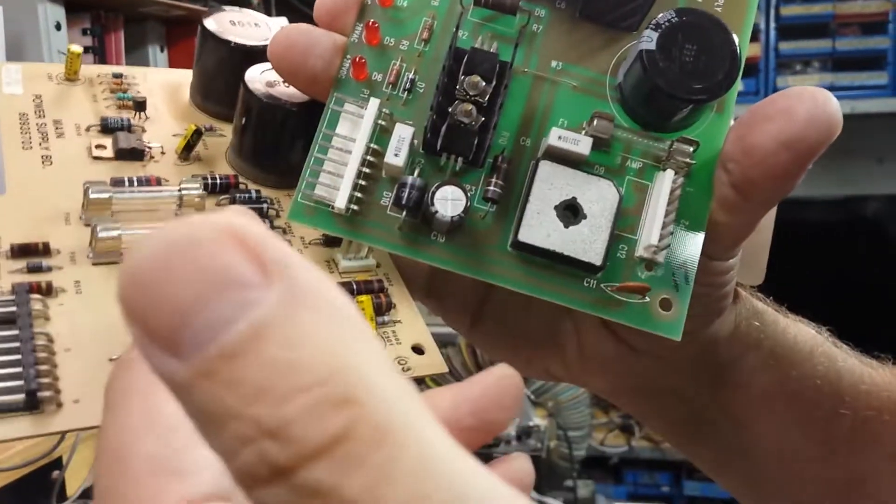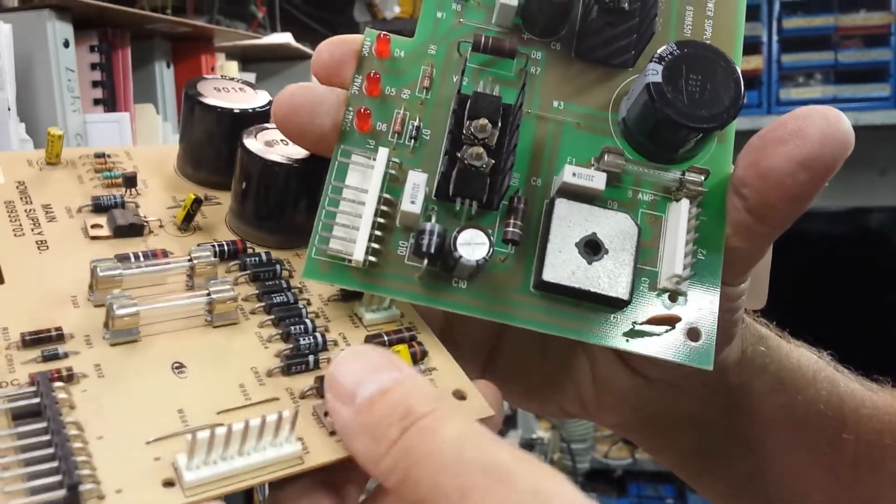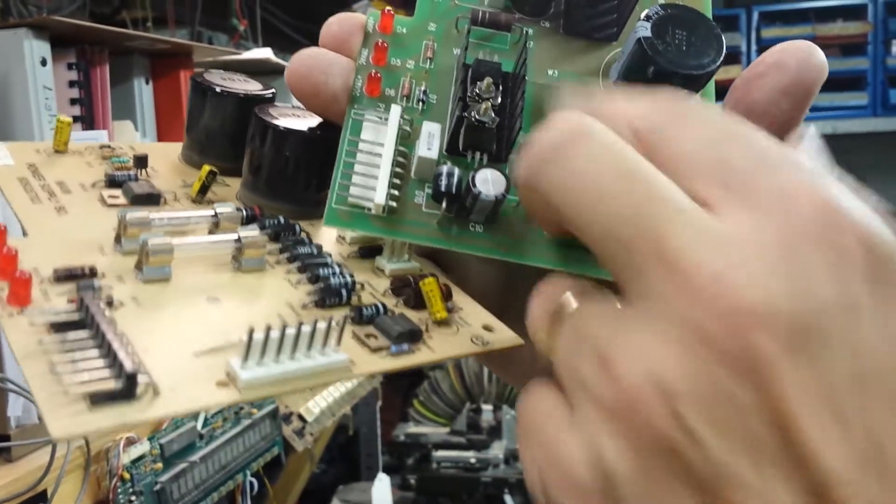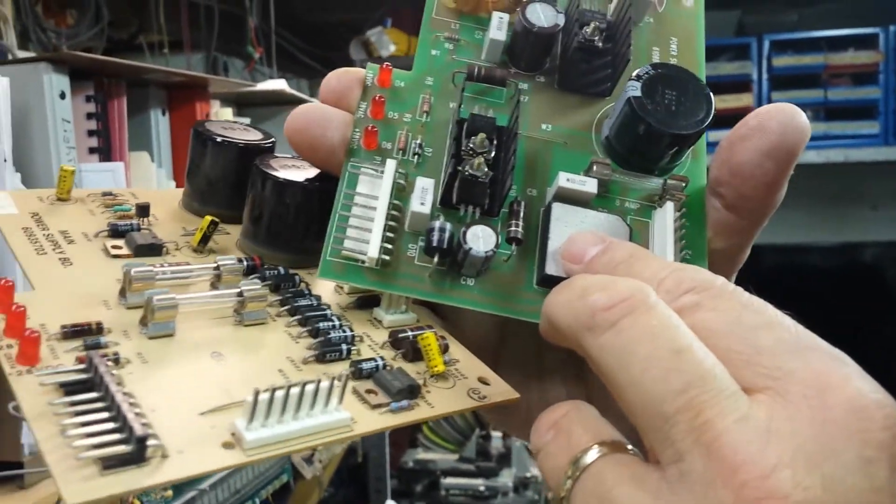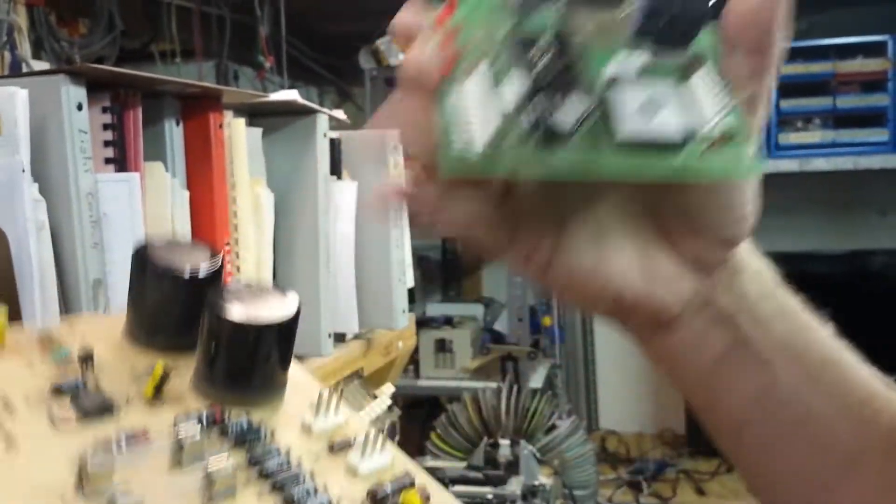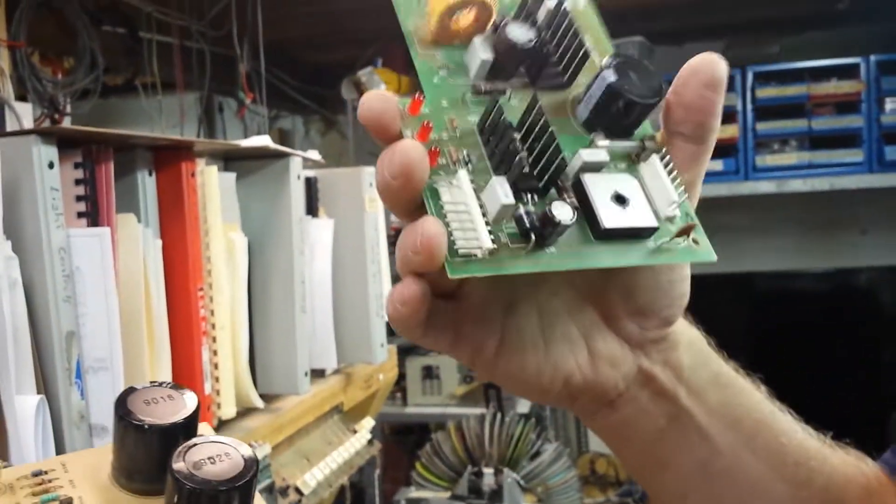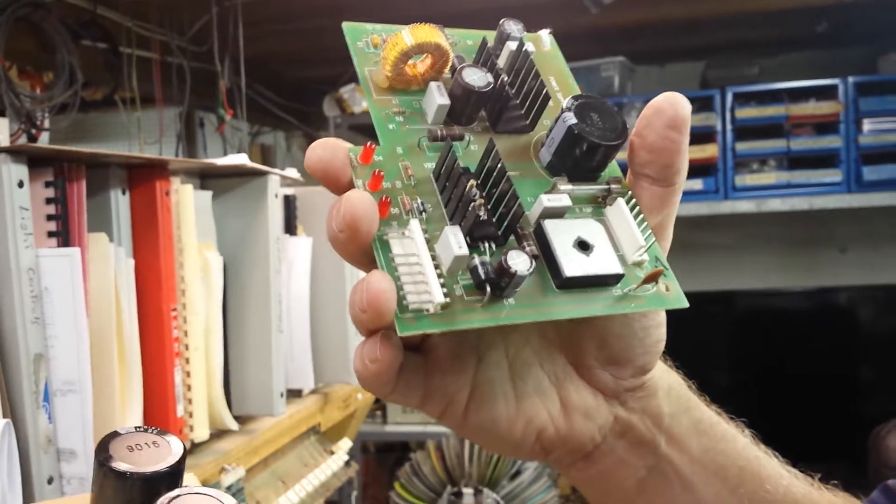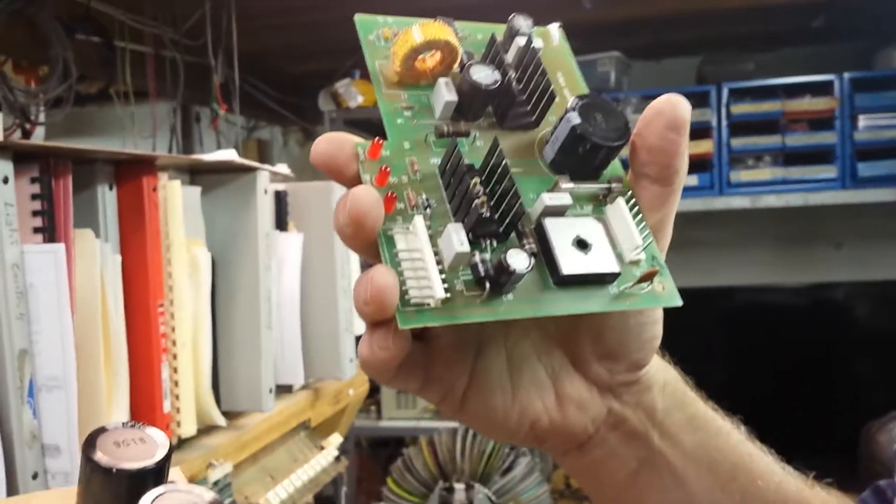Now these boards are interchangeable. The only thing is, this is newer technology, you're not going to be using the power transistors anymore, it has its own regulators built in, and this is a better board for CD jukeboxes because it has more stable current. And if you're running a CD jukebox, it's better to use the newer type board.